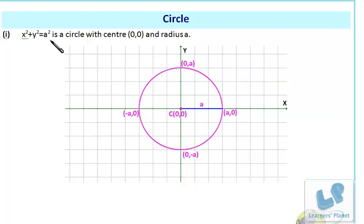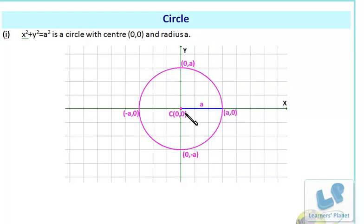The equation x squared plus y squared equals a squared is the equation of a circle with center at the origin (0, 0) and radius a. The points (a, 0), (minus a, 0), (0, a), and (0, minus a) all lie on the circle. Every point on the circumference is equidistant from the center — that distance is the radius.